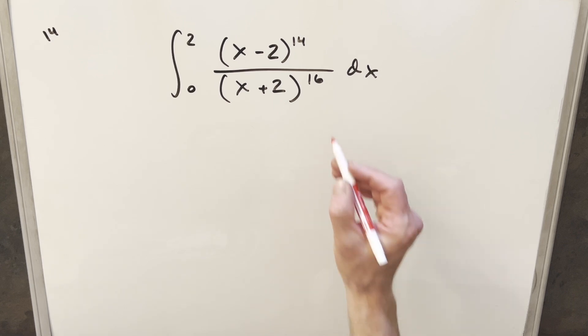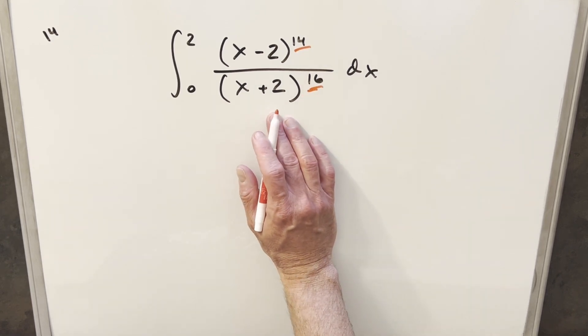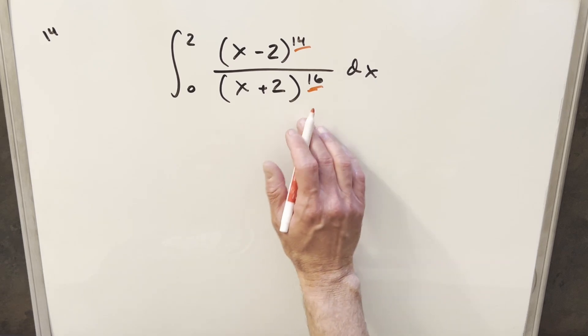Now this was pretty good because we have pretty large exponents here on both the numerator and denominator, so we can't really just multiply it out. I mean we could, but it would take forever. It would be pretty tedious.